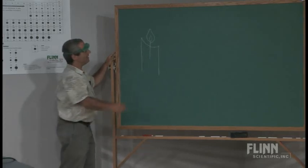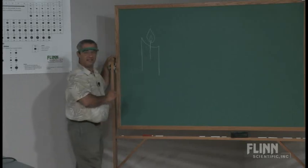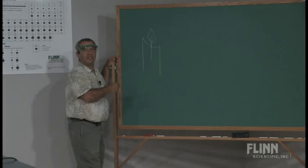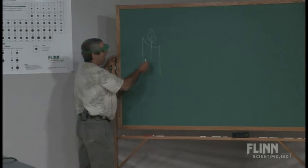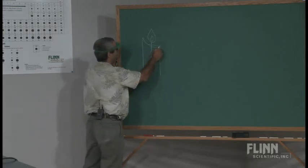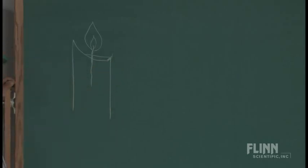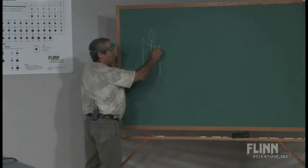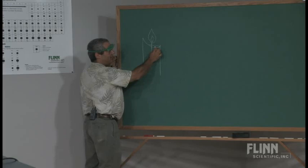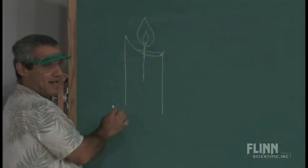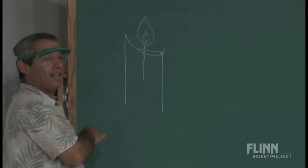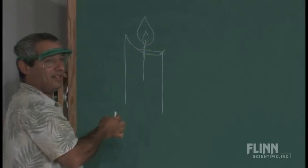It's not the wax in the solid state that doesn't burn very well at all — the molecules are too packed together, they don't have access to the oxygen to react. And it's not even really the liquid that forms around it. It's actually the gaseous wax, the wax vapors. The role of the wick is to wick that liquid up through capillary action to the top of the wick.